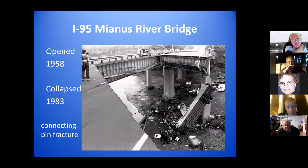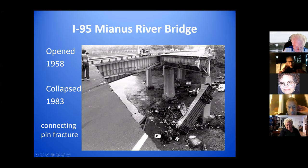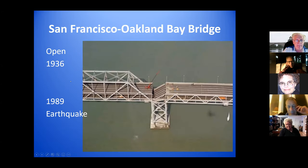The Mianus River Bridge opened in 1958 and collapsed in 1983 due to a connecting pin fracture. Part of the bridge fell down and people were not able to stop, resulting in about 13 deaths. The San Francisco–Oakland Bay Bridge opened in 1936, and one section of the upper roadway fell to the lower roadway in a 1989 earthquake.